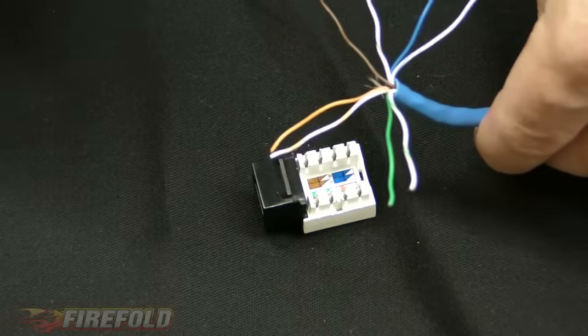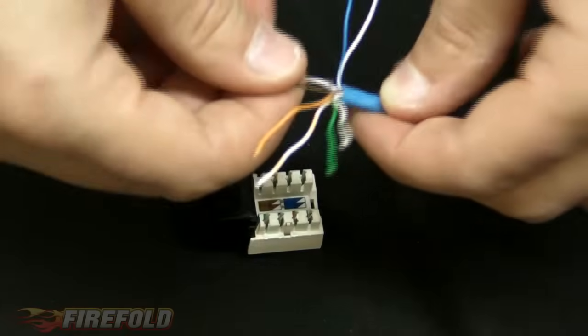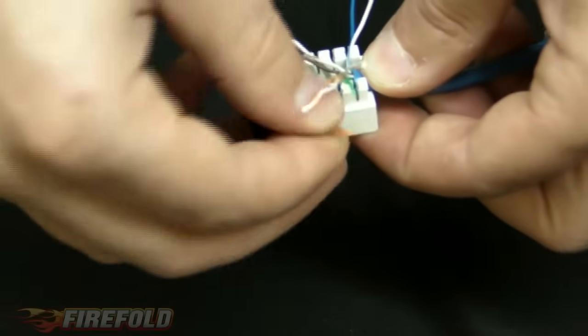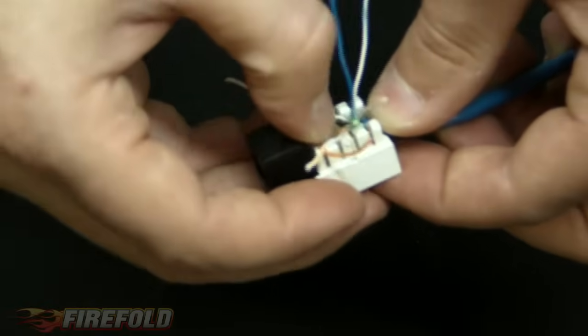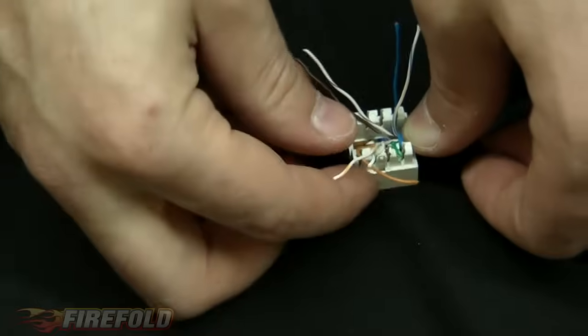Next, you want to take your Cat5 wire. We separated the four pairs of wires. Take your keystone jack. You want to go ahead and lay this about a quarter of an inch in, right like that. And you want to go ahead and put the corresponding wires, which would be the B chart, in their slots.